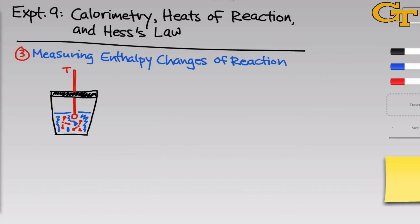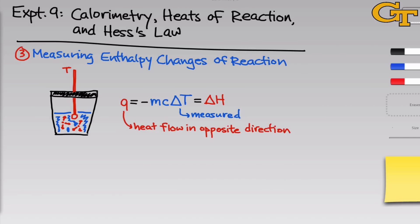Now let's clarify how we actually measure enthalpy changes of reaction inside a calorimeter. We have the reactants inside a bath solution, and they either release or absorb heat to the surrounding bath solution. The heat absorbed or released by the reacting substances Q equals negative M — the mass of the bath solution — times C, its specific heat, times delta T, the measured change in temperature of the bath solution. This equals the delta H for the reaction, assuming the calorimeter is a perfect insulator and we're under constant pressure conditions. Note that Q is heat flow in the opposite direction — this is where the negative sign comes from. If the temperature of the bath solution increases, the bath solution is absorbing heat, which means the reacting species are releasing heat, and so Q in that case would be negative.